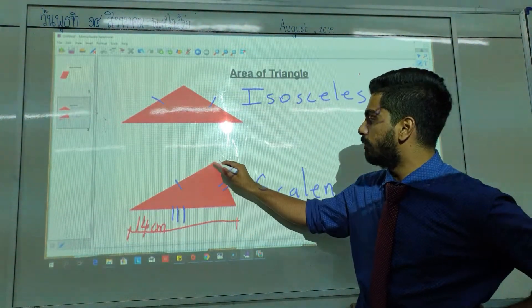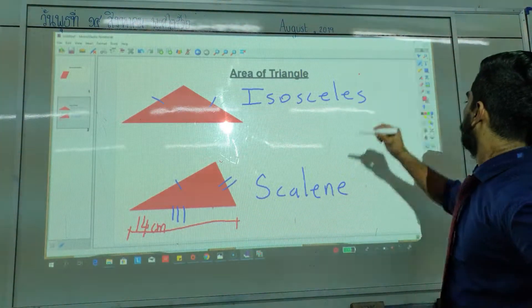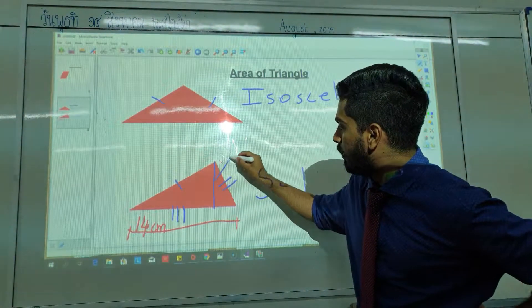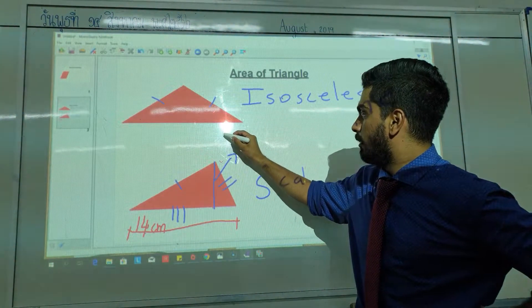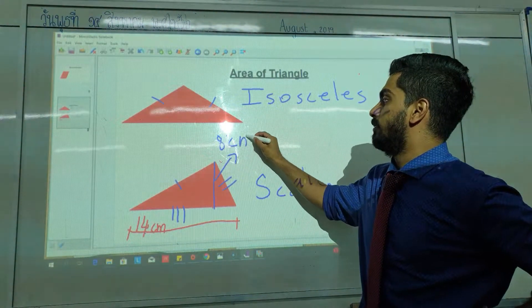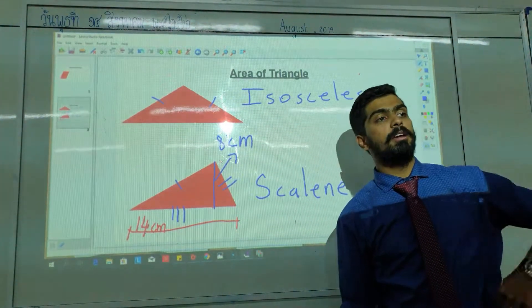And the height of this triangle—let me change the color. The height of this triangle is, let's say, 8 cm. Fine.